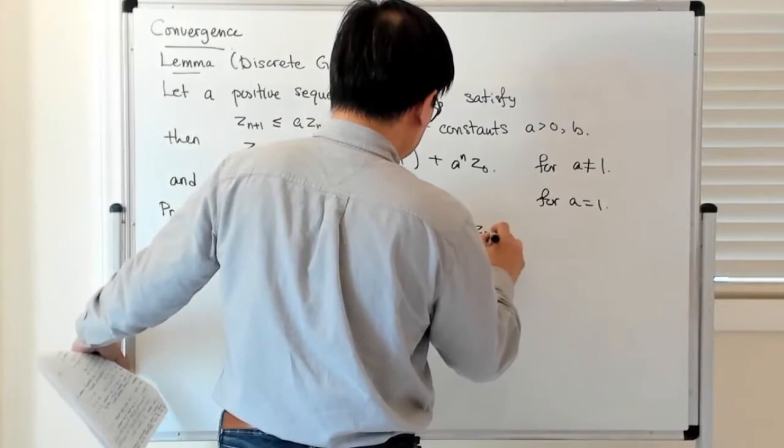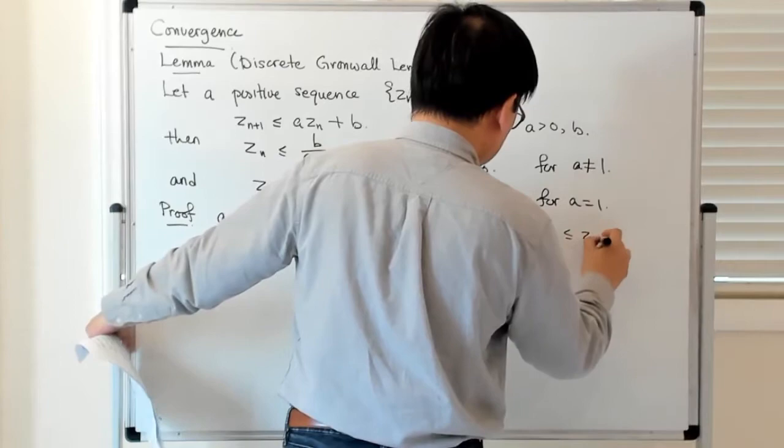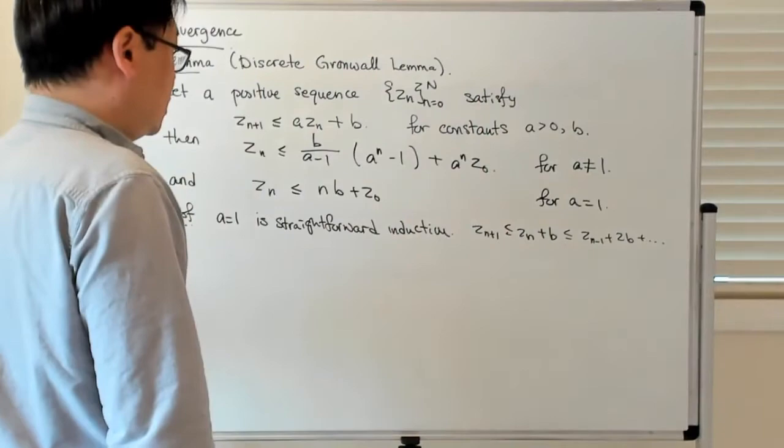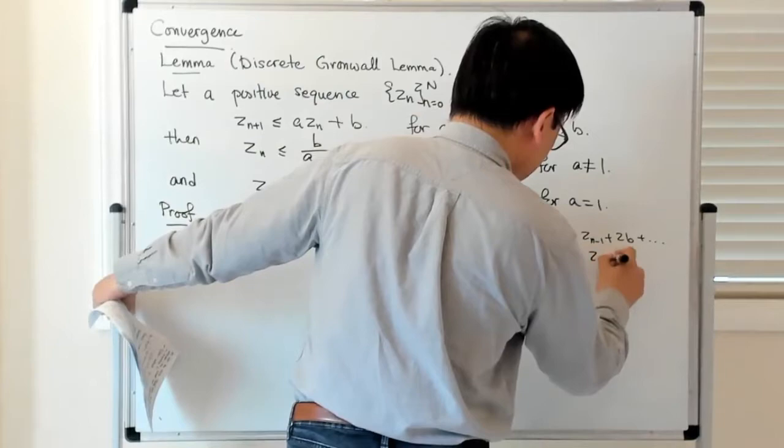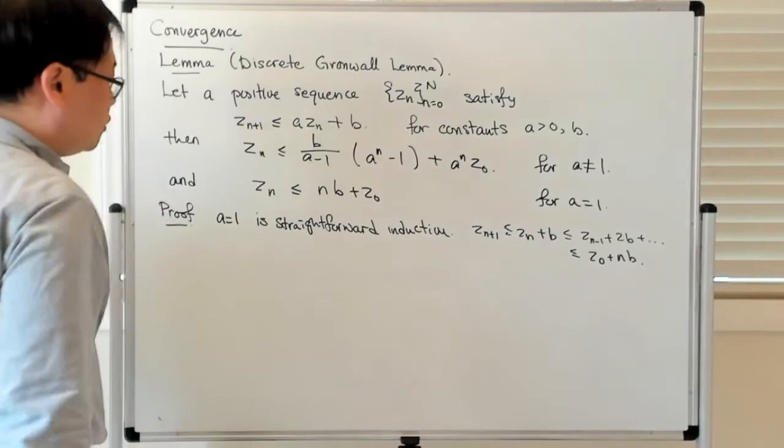It's not even necessarily induction, it's almost recursion. You have Z_{n+1} is less than or equal to Z_n + B, which is less than or equal to Z_{n-1} + 2B, and so on. By the time you're done, this gives you Z_0 + NB. It's just recursively applying this inequality for A equals 1.